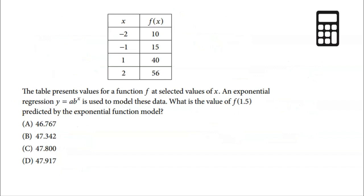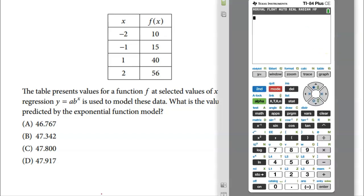Last problem here, and this is a calculator one. So again, I want to notice that this was from the calculator portion of the exam. All right. The table presents values for a function F at selected values of X. An exponential regression, Y equals A times B to the X is used to model this data. What is the value of F of 1.5 predicted by the exponential function model? All right. So basically we want to take 1.5 and plug it into the model, but I need the model first. And how do I find that model? You're going to need your calculator for sure. Hopefully you are really well-trained on how to find regression models on your calculator.